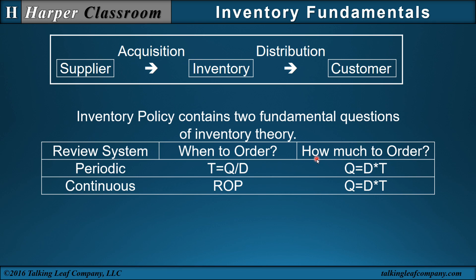How much to order is where the Q lot size comes in, and when to order is T, the inventory period, or ROP, the reorder point. The periodic review system uses T and Q, and the continuous review system uses ROP and Q.